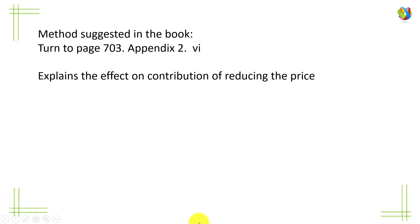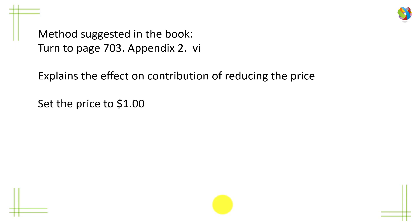I'm going to offer two ways of doing this. The first is the one suggested in the book, although it's not the way I would use it, but students have asked me to cover it anyway. If you have the book, turn to page 703, appendix 2, part 6. This appendix explains the effect on contribution margin of reducing the price. The first suggestion is: if you don't know the price, set the price to 1 — this makes the arithmetic easier.